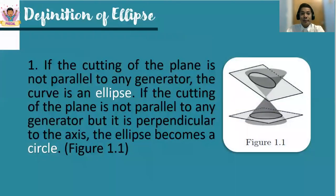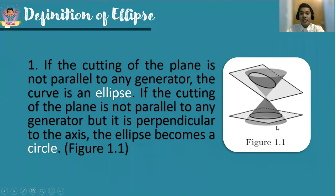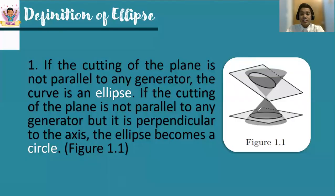Based on the discovery of Apollonius of Perga, referring to an ellipse as a cutting of the plane which is not parallel to any generator — the curve formed will be an ellipse. However, when it is not parallel but perpendicular to any of the generators, we form a special type of ellipse, and that is a circle. So the circle is still part of the ellipses. The key characteristic to remember from Apollonius of Perga's study is the phrase 'not parallel.'